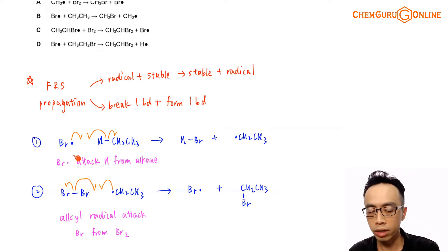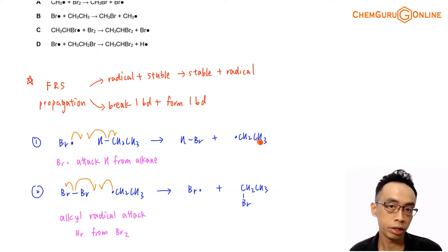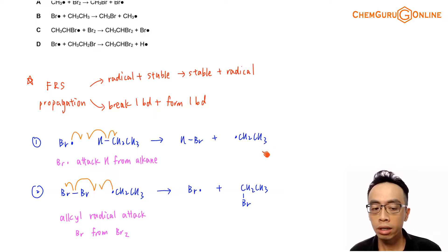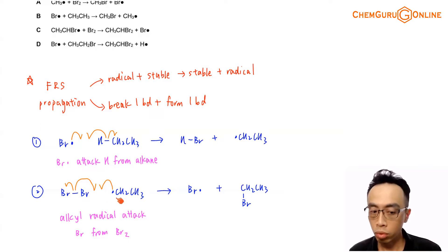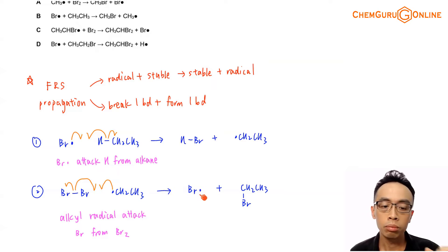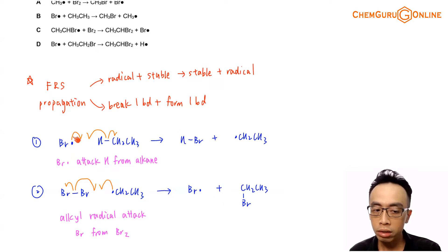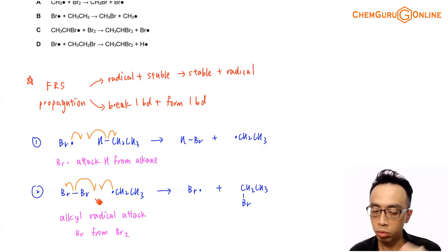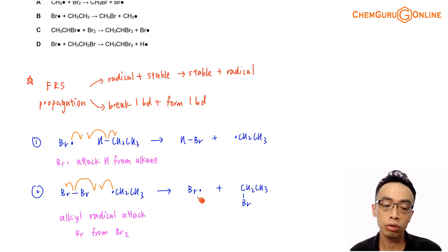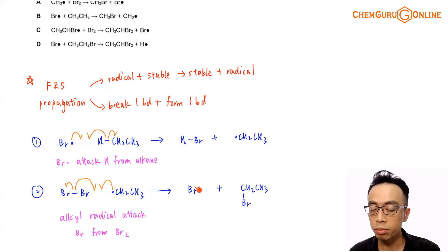Remember, the bromine radical attacks the hydrogen, forms HBr, and generates your carbon radical — in this case your ethyl radical. The next thing the ethyl radical will do is attack your bromine molecule, take a bromine, form your monosubstituted product, and regenerate a bromine radical. So this is the standard propagation step: bromine radical attacks the alkane, forms a carbon radical; carbon radical attacks bromine, forms a substituted product and regenerates the bromine radical, and the reaction continues.